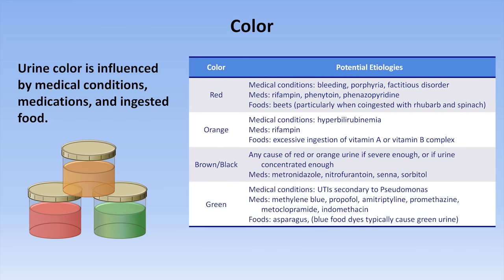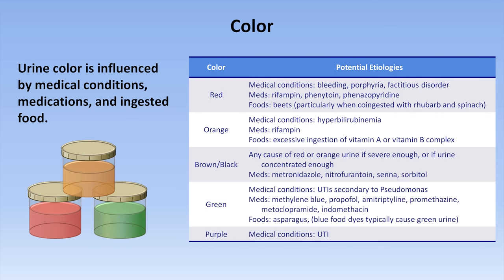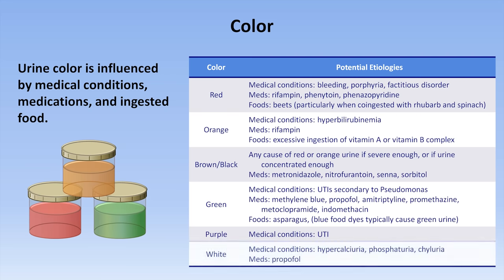Green urine is also not common, but has been reported in patients with UTIs secondary to Pseudomonas. There are a number of medications that lead to green urine, including methylene blue. Although methylene blue, as its name suggests, is blue, when that color mixes with naturally yellow urine the result is green. The same holds true for ingestion of excessive amounts of blue dye. Purple urine, which I've never personally seen, has been reported in the literature in cases of infected urinary catheters. And white urine has been reported in hypercalciuria and with chyluria, which is leakage of lymphatic fluid into the urine, most commonly seen in the tropics due to a parasitic infection called filariasis.